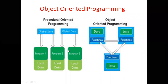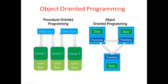You can see here the procedure-oriented programming has global data shared by functions and local data. In object-oriented programming, this blue box is called an object. Inside the object we divide into two parts: first part for data, second part for functions. Data means student ID, student name, student college name. Functions mean what operations a student can perform — a student can read a book, write notes. These are the operations of a student.